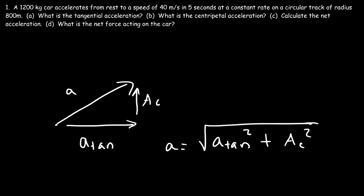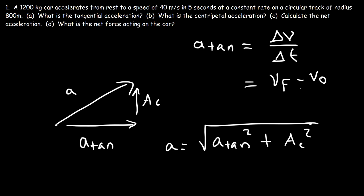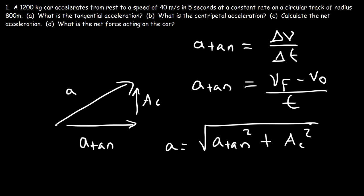The tangential acceleration is calculated just like acceleration in kinematics — it's the change in velocity divided by the change in time: V_final minus V_initial divided by T, where T is the time over which the speed changes. The centripetal acceleration is simply V squared divided by the radius of the circle.